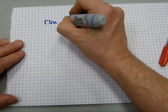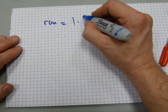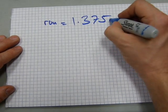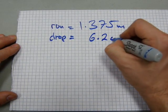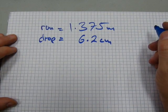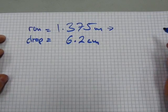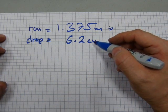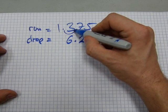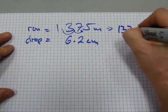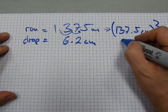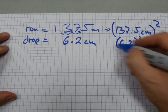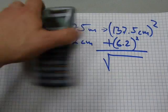One more in metric. We have a run of 1.375 meters. And we have a drop of 6.2 centimeters. Just an itty bit of metric conversion. This also needs to be in centimeters. So from meters to centimeters, that's two spots. So I'm going one, two, that's 137.5 centimeters. And it needs to be squared that way. And the 6.2 as good as is, needs to be squared that way. Add them and square root the result. Let's do it.